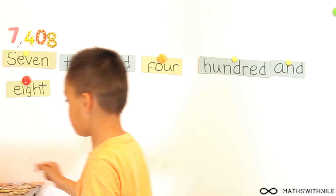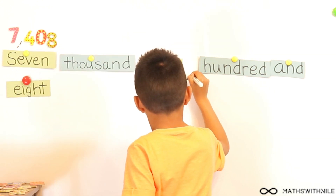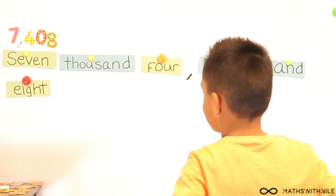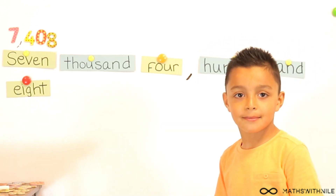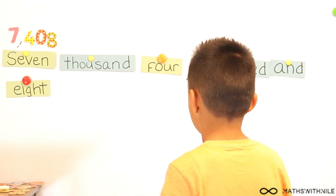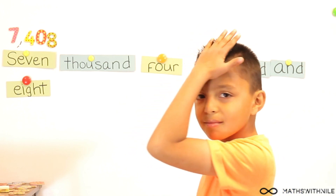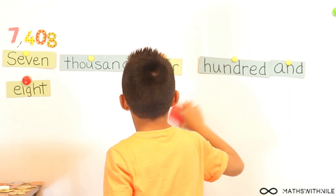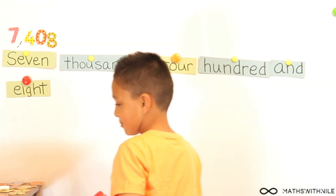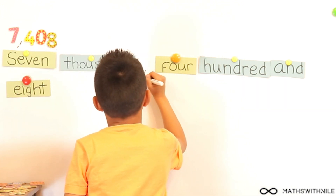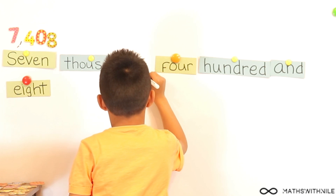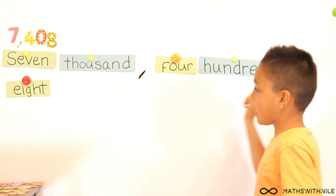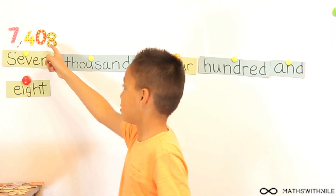Are you happy with that? No, I'm not happy with that. Now I'm happy with that. Are you sure? I get it now — I didn't put my comma in the right place. It would normally go here. Can you read it out for us now? Seven thousand, four hundred and eight.